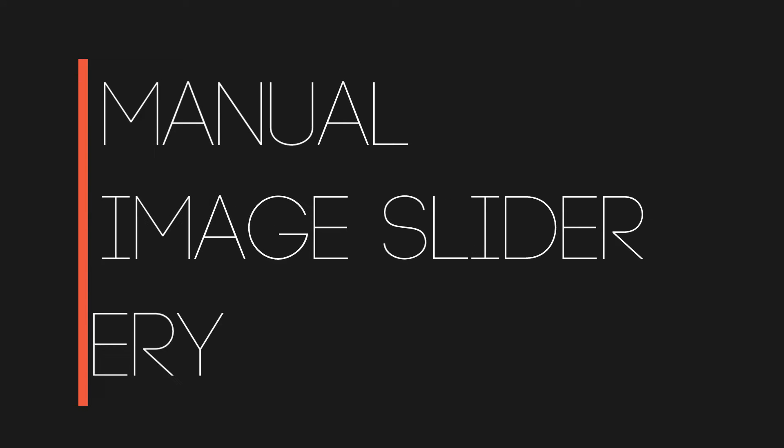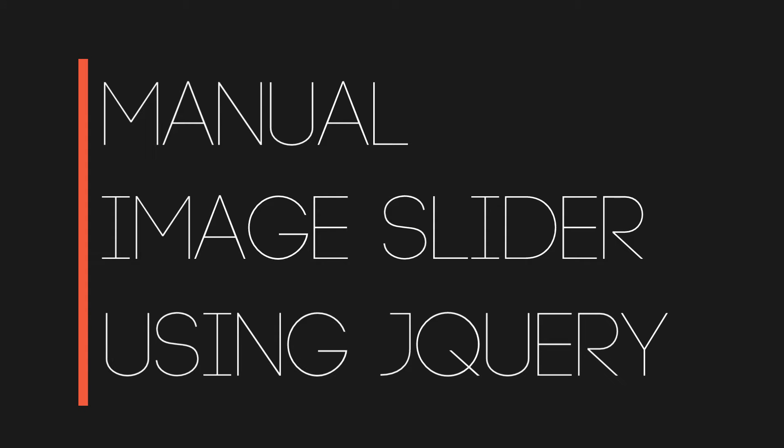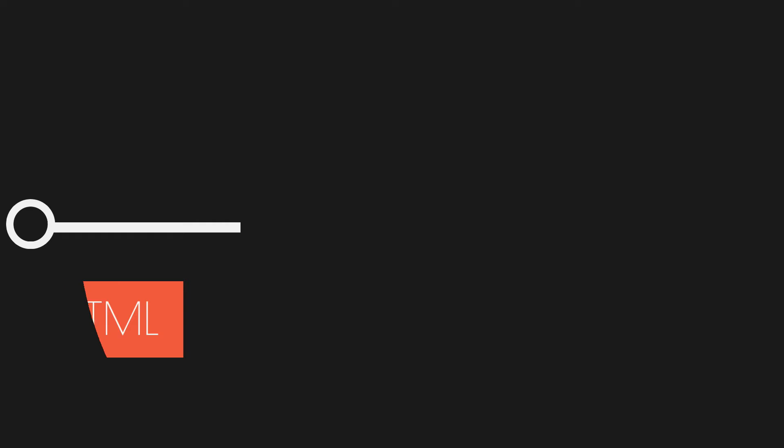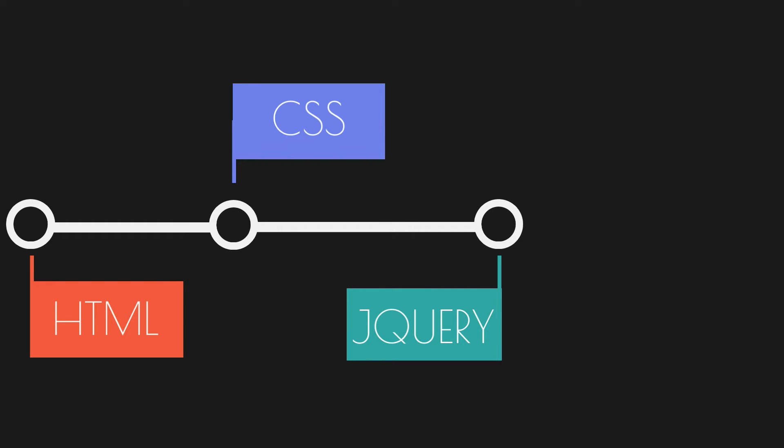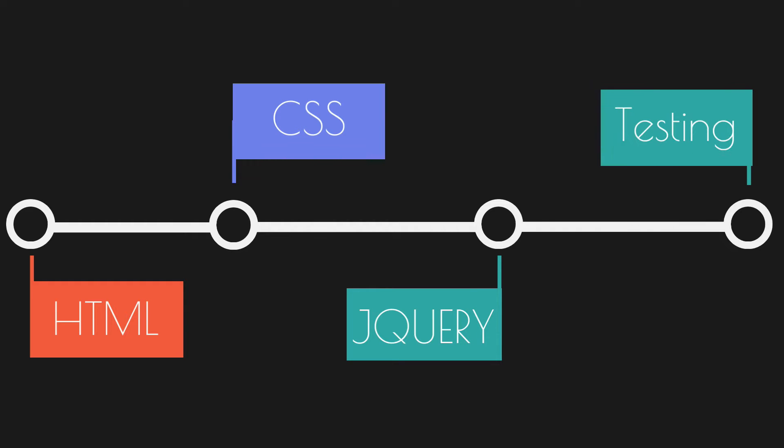Hello guys, today we'll be learning how to make a manual image slider using jQuery. Here are the steps we need to follow to make a slider. First, we'll begin by writing HTML. Second, we'll write CSS. Third, we'll write jQuery. And finally, we'll be testing our code.